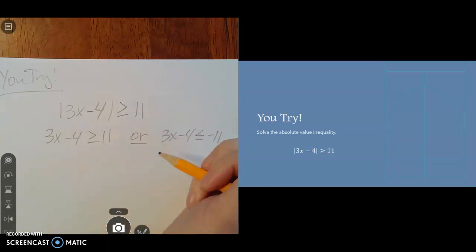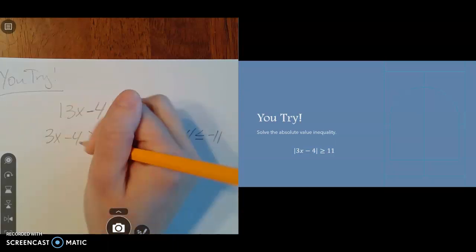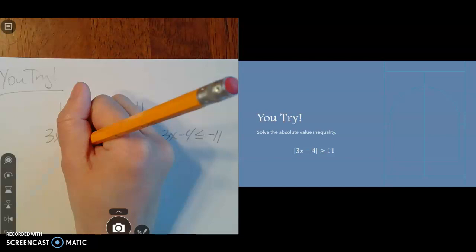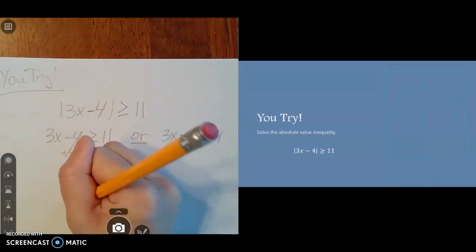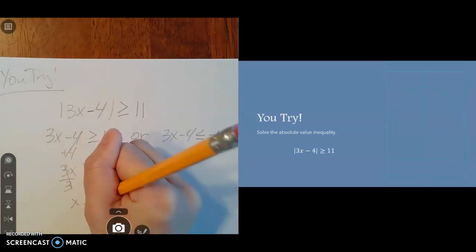All right, let's solve each one separately. So the first one, I'll add 4 to both sides. So I'll have 3x is greater than or equal to 15. I'll divide both sides by 3, so x is greater than or equal to 5.